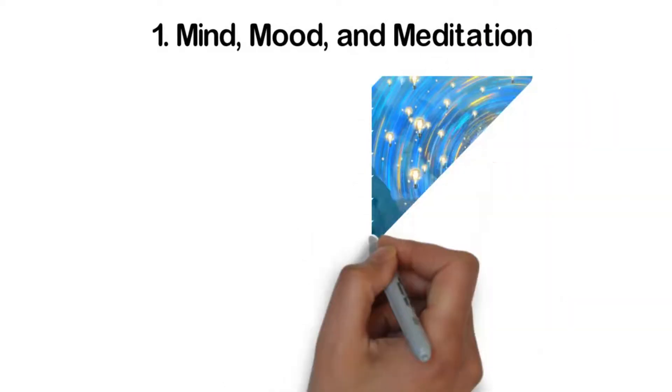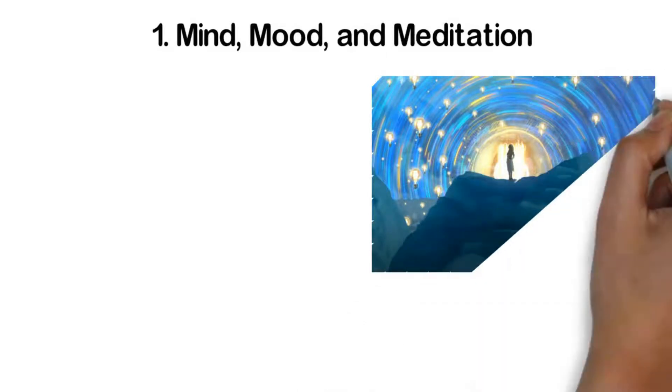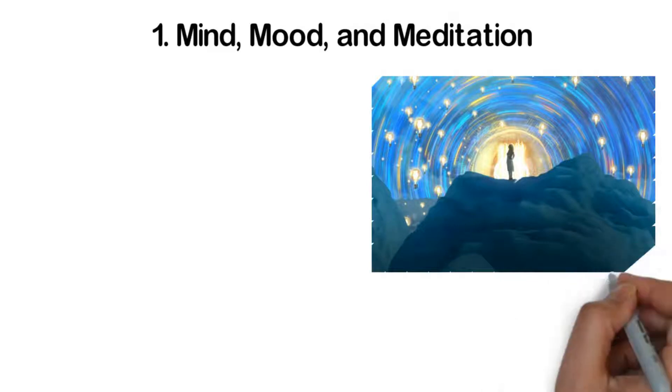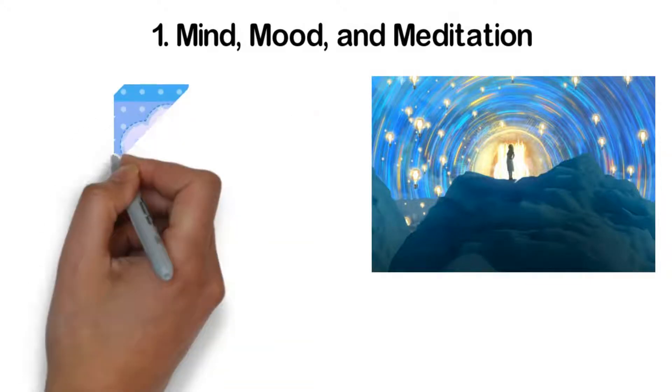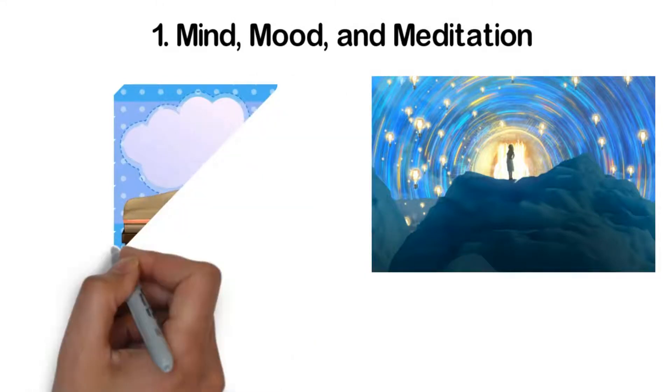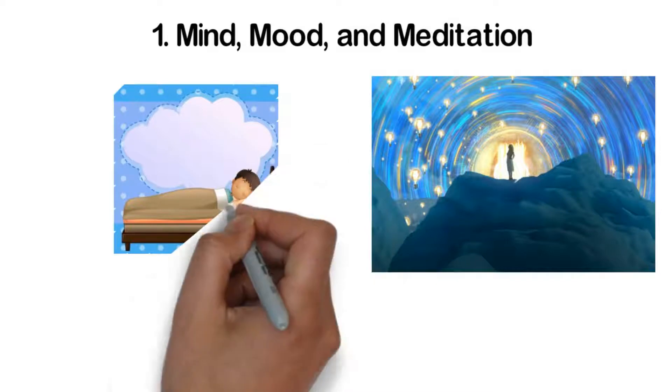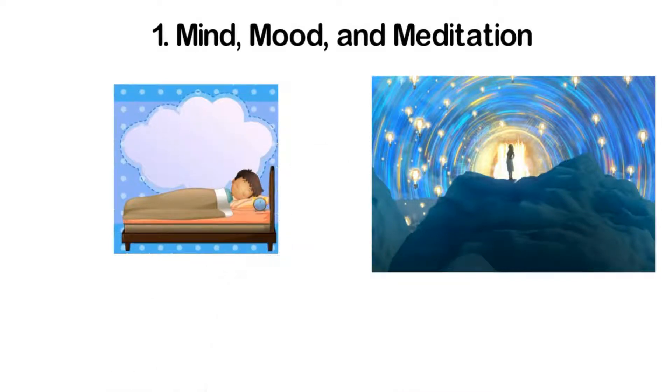One: Mind, Mood, and Meditation. The REM stage of the sleep cycle, which takes place in increasing amounts as the night progresses, is an active sleep stage in which the most vivid dreams tend to occur. This means that in order to spend more time with your dreams to practice lucid dreaming, you also need to work towards getting more nights of restful sleep. Set yourself up for a night of sweet dreams by keeping your room clutter-free, cool, and quiet.